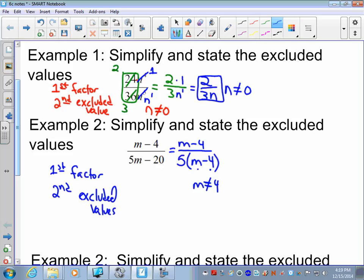And the third step is just to simplify. So we look what on the numerator and denominator is the same. Well, I have an m minus 4 in the numerator and an m minus 4 in the denominator. m minus 4 divided by m minus 4 is 1. Simplify this. We have 1 in the numerator divided by 5. With the excluded value, m cannot equal 4. That's your final answer.